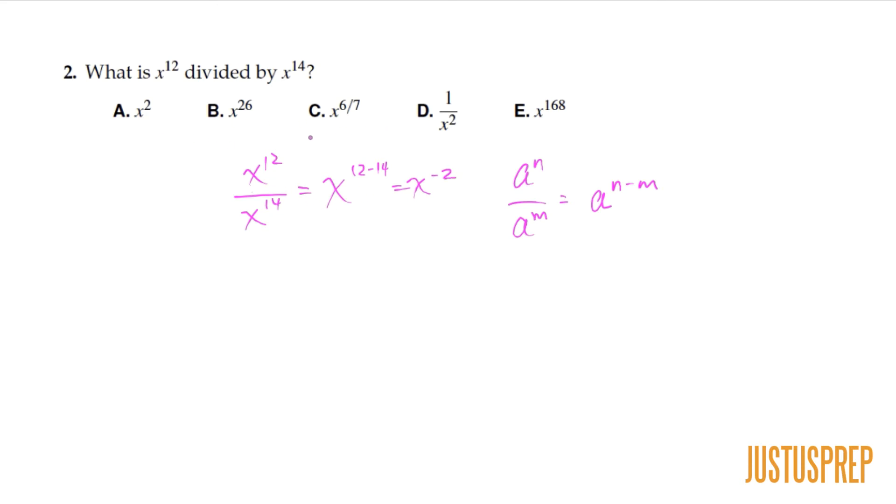So this would really be x to the 12 minus 14, which is x to the negative two. So if you look at these answer choices, we can do some elimination. It's not 26. It's not two. It's not 6 seventh. It's not 168. And here we have one over x squared.